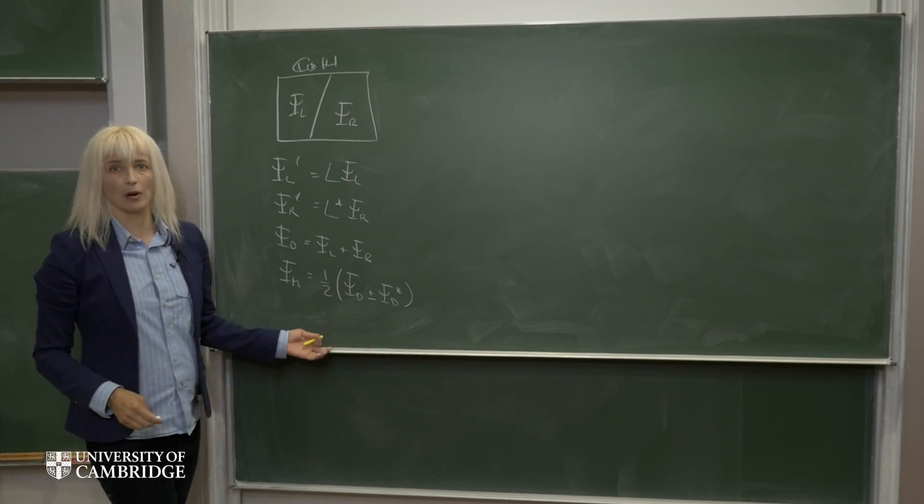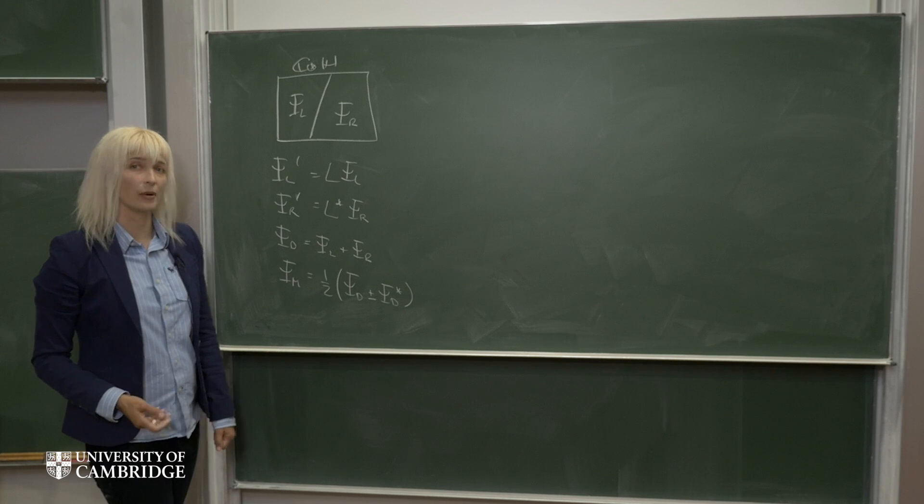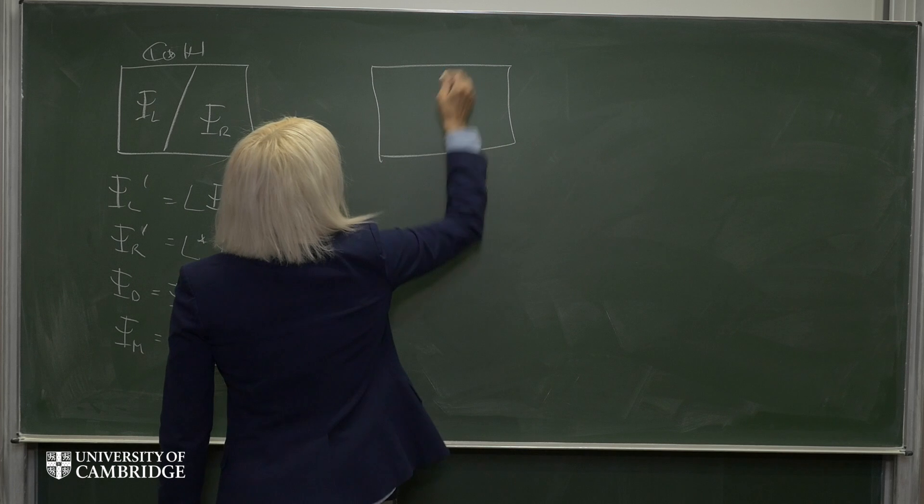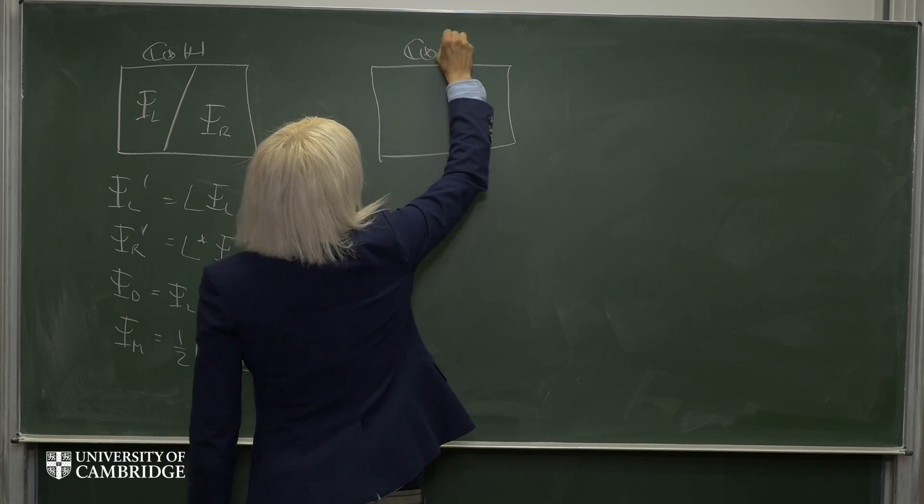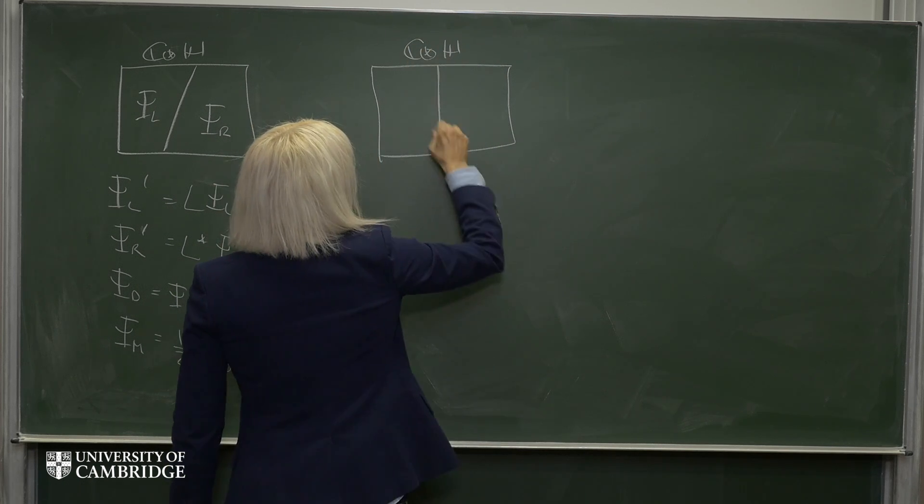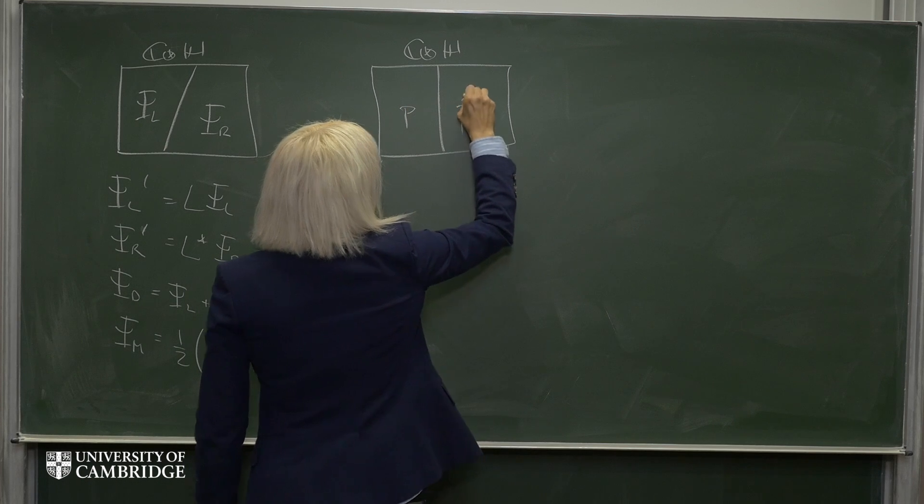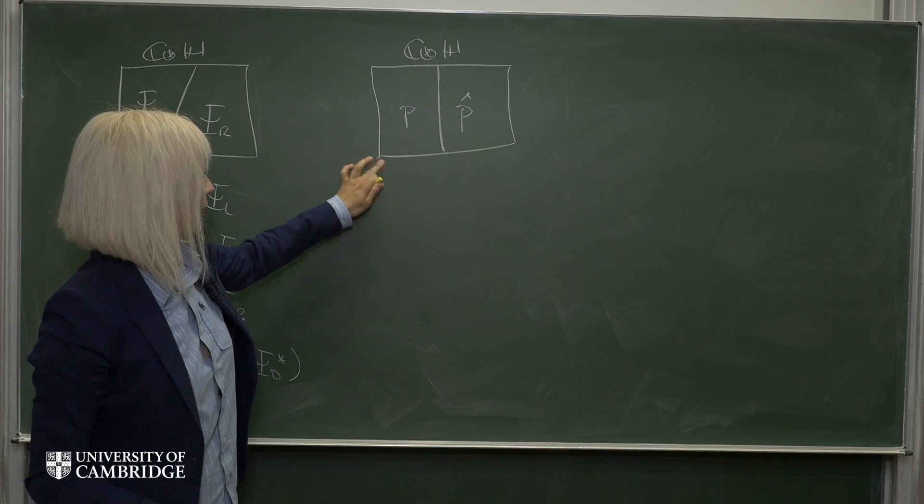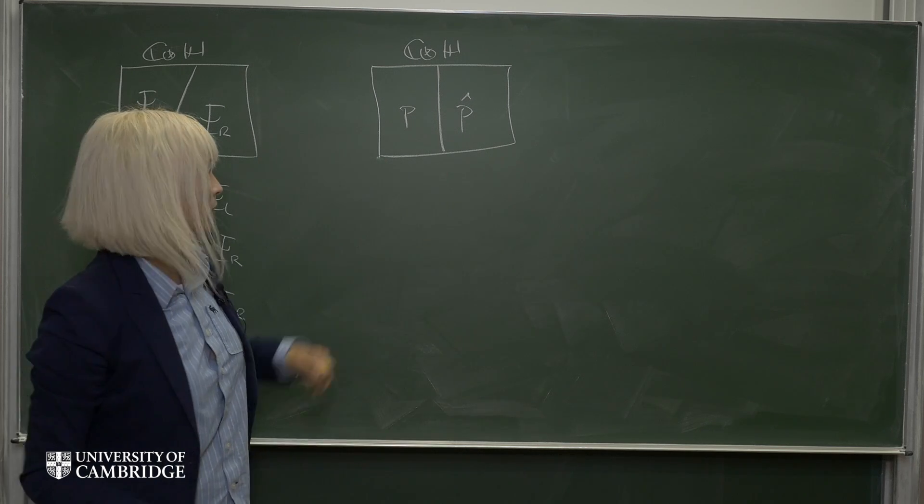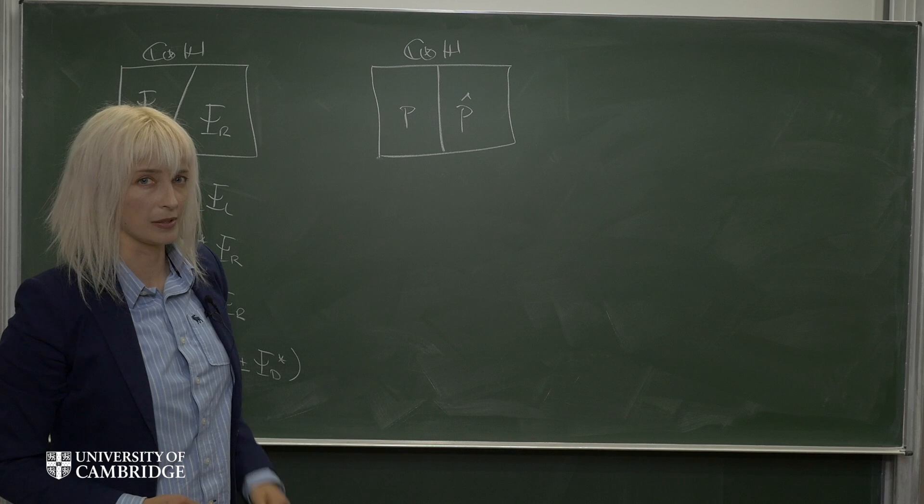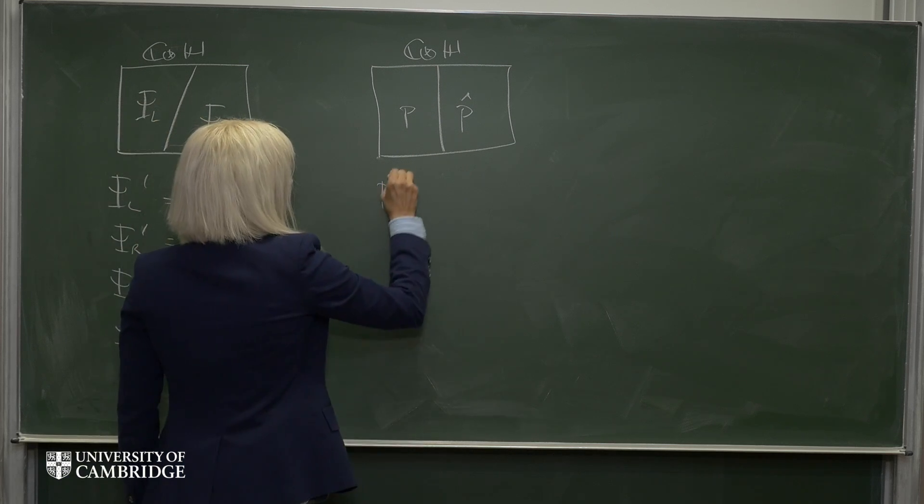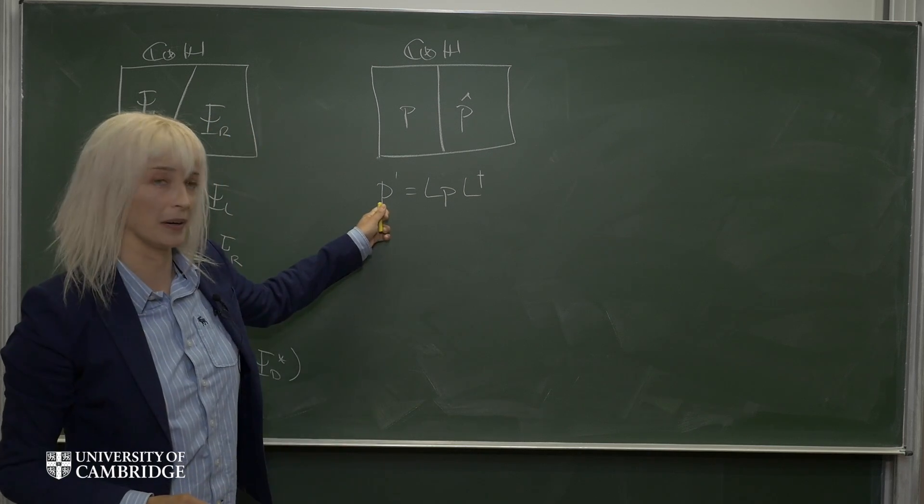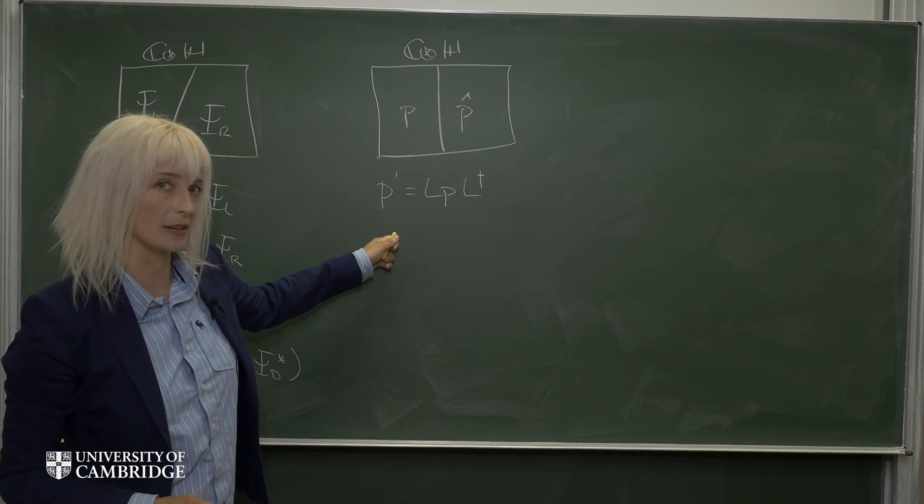But it turns out that we can model more than just spinors using the complex quaternions. We can also model four vectors. So this time the complex quaternions split in a different way, and we get two four vectors. A contravariant four vector transforms like this, and its covariant counterpart is simply given by the complex conjugate of this.